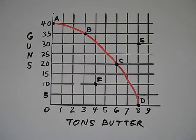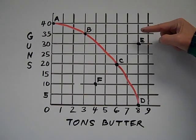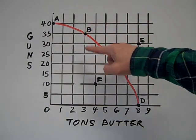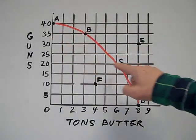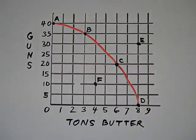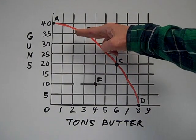You can press pause. I'll give you the answer in a minute. The answer, the opportunity cost to go from point B to point C is 15 guns. At point B, they were producing 35 guns. At point C, they're producing 20. That's a loss of 15 guns. That's the opportunity cost to go from B to C. What are they gaining? They're going from three tons of butter to six. That means they're gaining an extra three tons of butter. The cost they're paying is 15 guns.